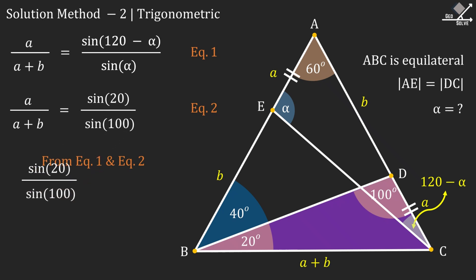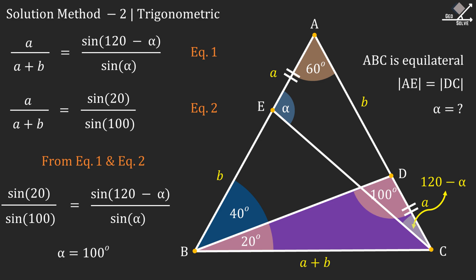right sides must also be equal. And we can write the following relationship. And from here alpha can be calculated as 100 degrees. I'll see you next time.